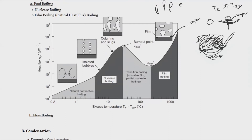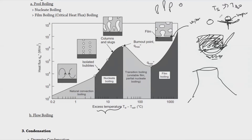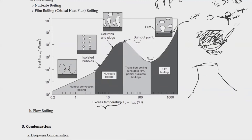Boiling starts with natural convection boiling and ends with film boiling, but in everyday and industrial use we typically operate in nucleate boiling. Film and nucleate boiling play a vital role in heat efficiency. In a very hot nuclear power plant, for instance, film boiling creates a resistance layer at the surface that significantly reduces heat transfer efficiency.